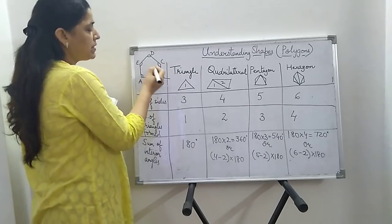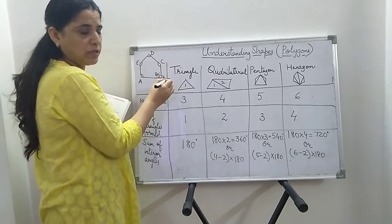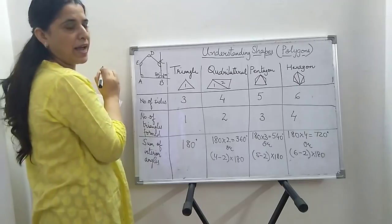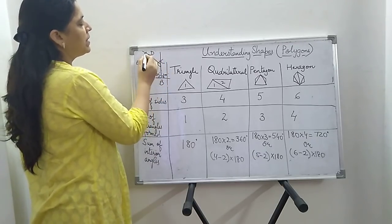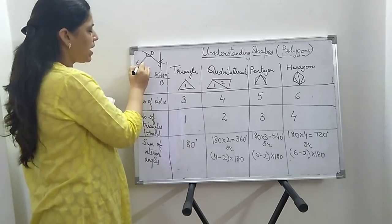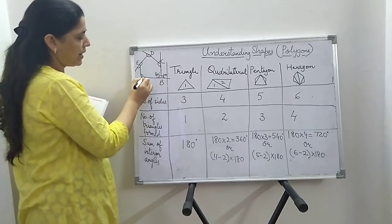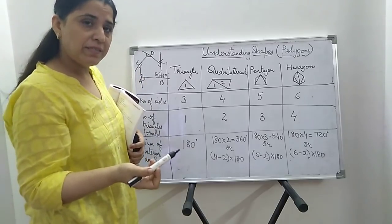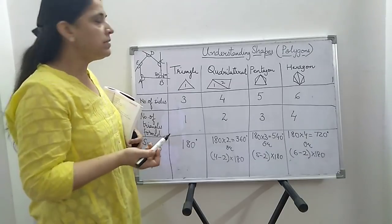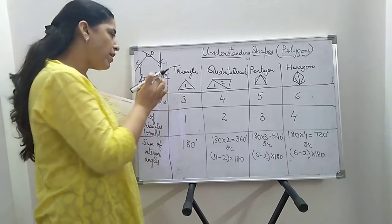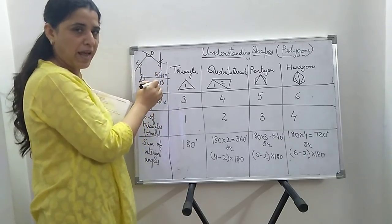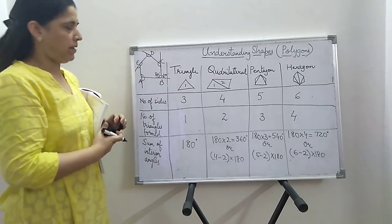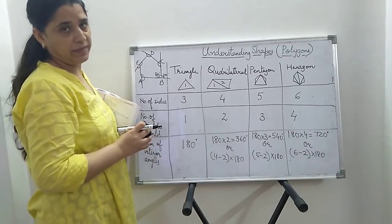If this is 80 degrees, what will be the exterior angle? 100 degrees. Similarly, if I extend B, C towards C, the angle so formed is the exterior angle. If I produce C, D, this angle is also an exterior angle. So how many exterior angles are there? 1, 2, 3, 4 and 5. If there are 5 interior angles, there are 5 exterior angles. If I know the exterior angle, I can find its adjacent interior angle, and if I know the interior angle, I can find its adjacent exterior angle because they form a linear pair.